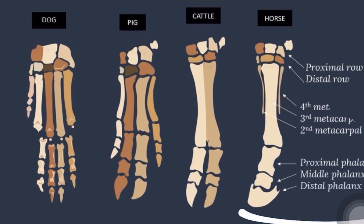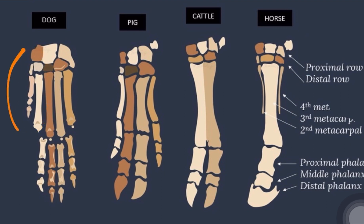The metatarsal bones and digits follow the same pattern as in the thoracic limb of horse and pig. But in carnivores, the first metatarsal bone is even more reduced than in the front limb. In ruminants, the fifth metatarsal bone is absent.